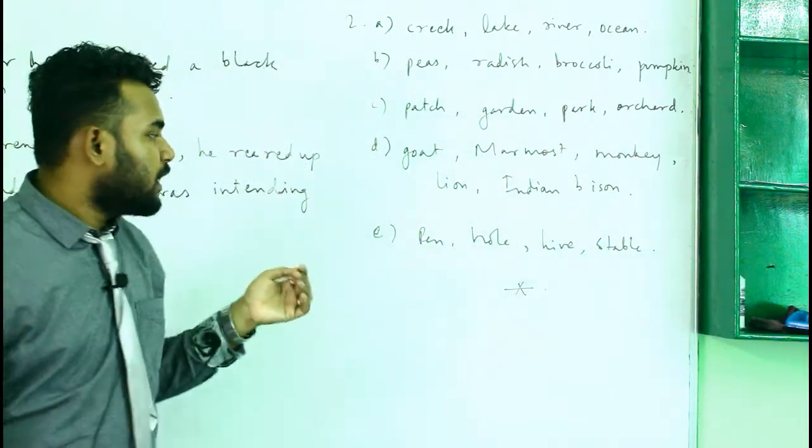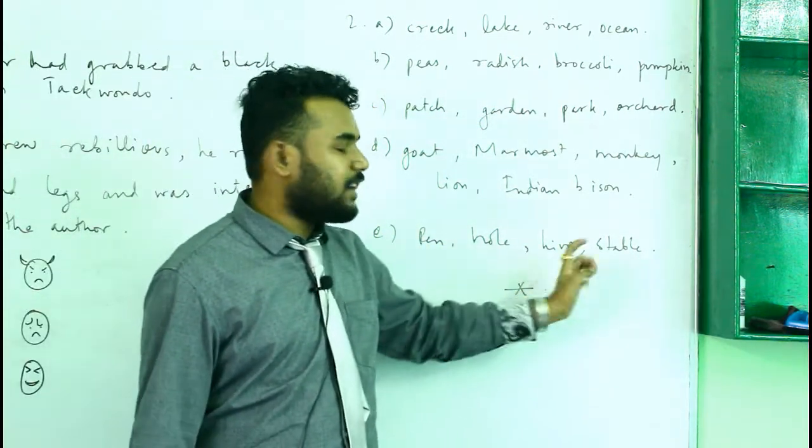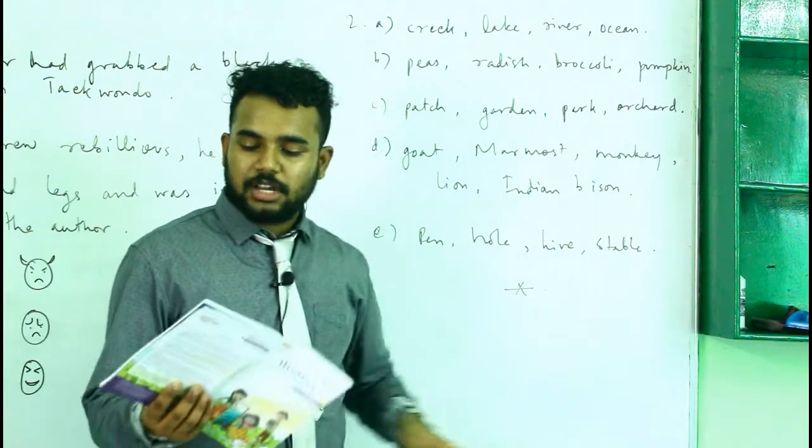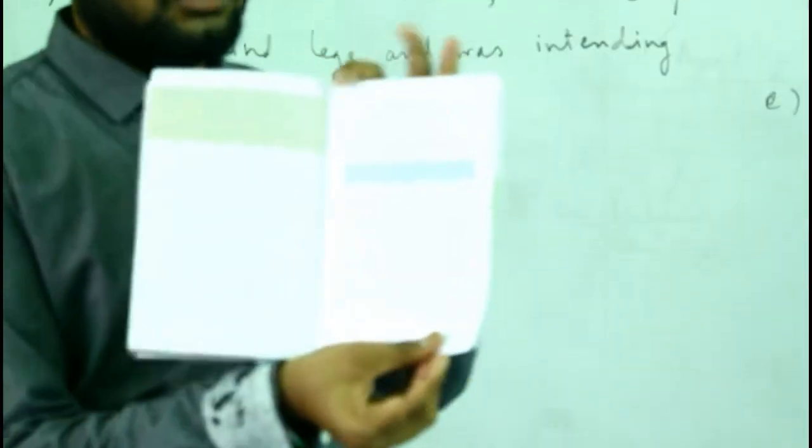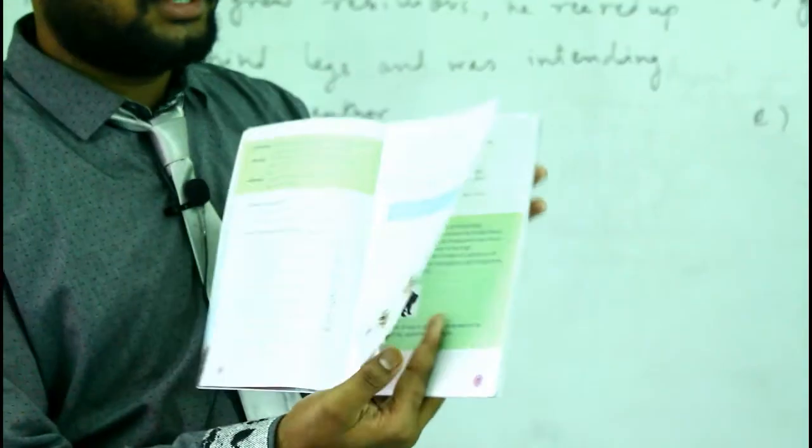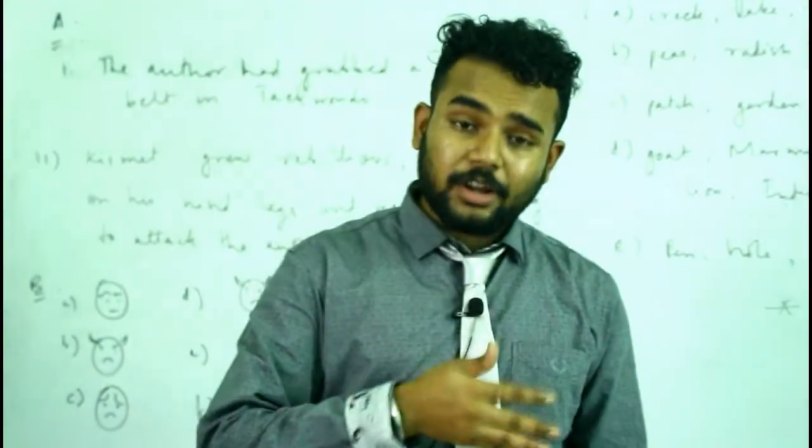Goat, marmot, monkey, lion, Indian bison. Pen means a small area where a goat lives, and then hole, then hive, and then stable. This was the question answers and there is a crossword given out here. This you can solve by yourself as a puzzle in the book itself.